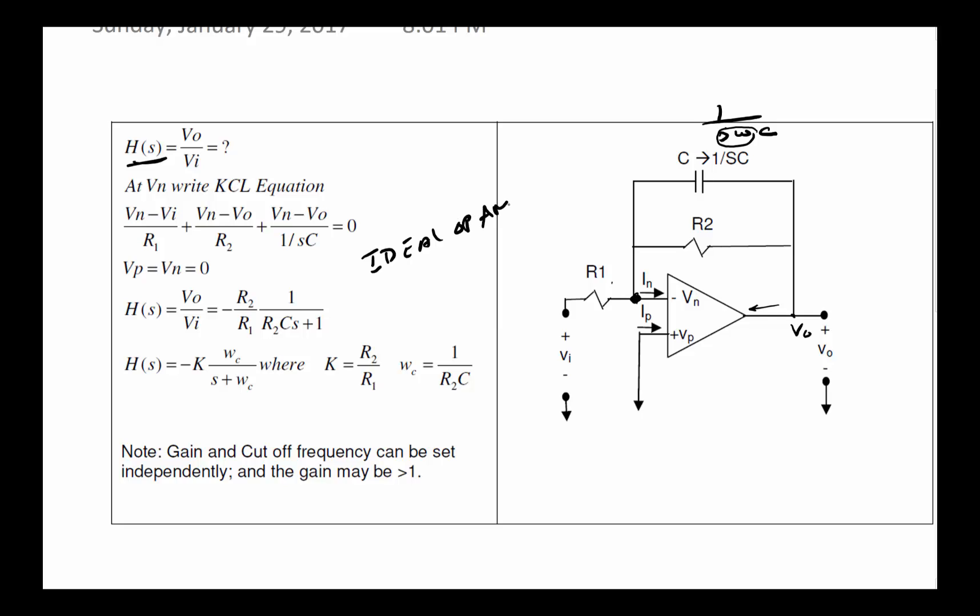In the case of an ideal op-amp model, open loop gain is infinite, so we are not limited by gain. I_p is equal to I_n equal to zero, so no need to write I_n for this node. And V_p is equal to V_n. In this particular case we see that V_p is 0, therefore V_p equals V_n equals 0.